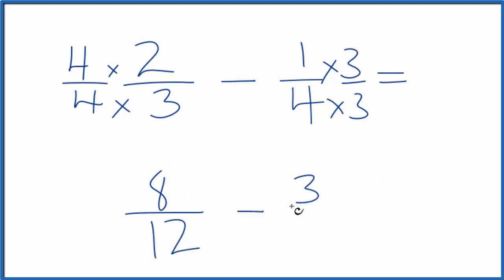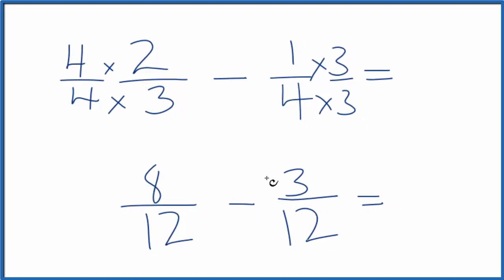And then here, 1 times 3, and 4 times 3 is 12. I'm just going to subtract the numerators. 8 minus 3 is 5. We bring the 12 across.